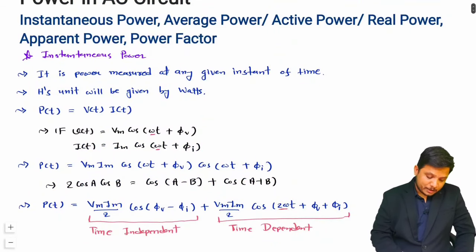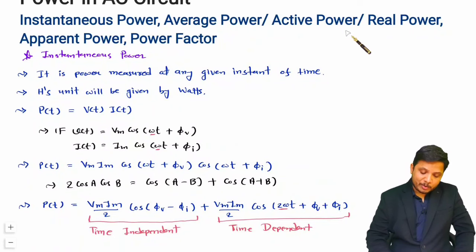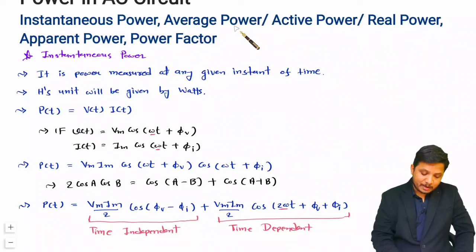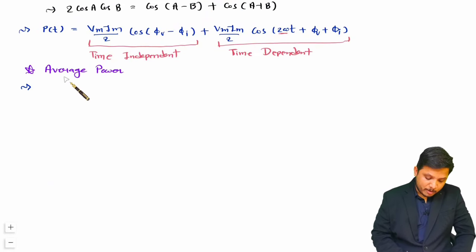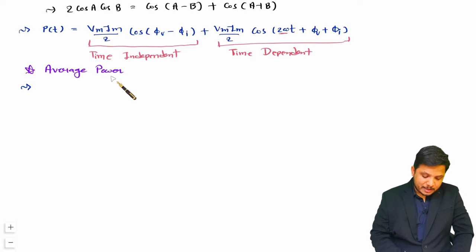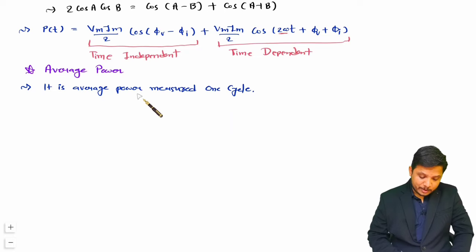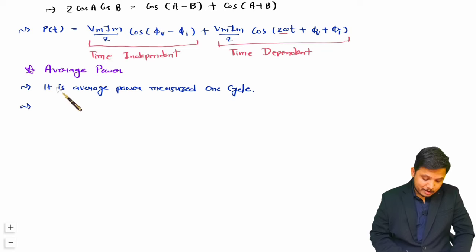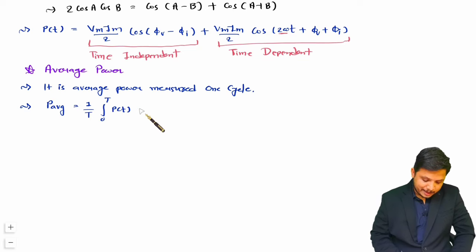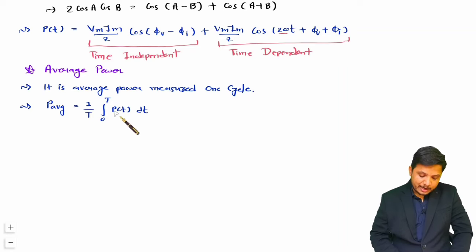Now let us discuss average power, also referred to as active power and real power. Average power is the power measured over one complete cycle — it is the average of instantaneous power over one cycle. To calculate average power: P = (1/T)·∫₀ᵀ p(t) dt, where we integrate instantaneous power p(t) over one full time period T.